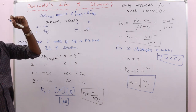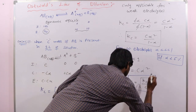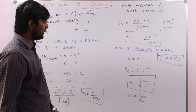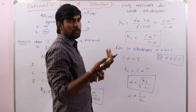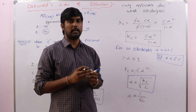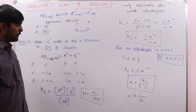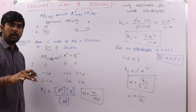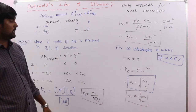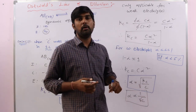This is the expression for alpha for weak electrolytes. Since Kc is the equilibrium constant, it depends only on temperature, so at a particular temperature Kc is constant. Therefore, alpha is inversely proportional to the square root of concentration. Upon dilution, concentration decreases, so alpha increases — more concentration means less ionization, less concentration means more ionization.